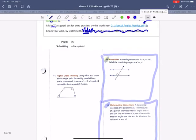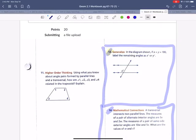Question 13. It says, generalize, in the diagram shown, x and y adds up to 180. So that means it's a linear pair.